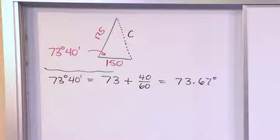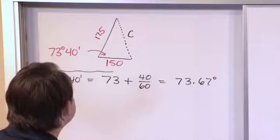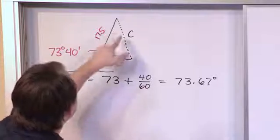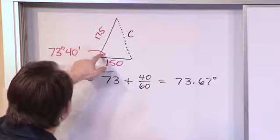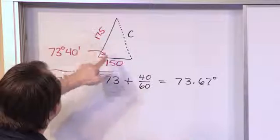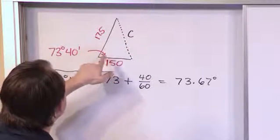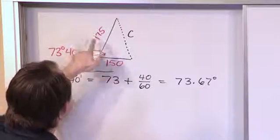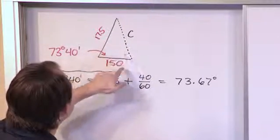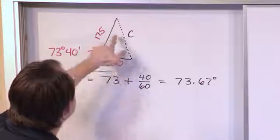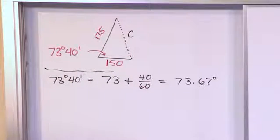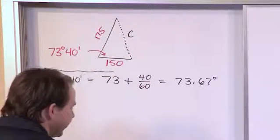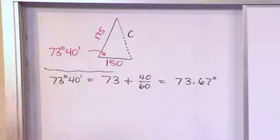Notice that we cannot use the law of sines for this problem because we don't have enough information. We know this angle and we know these two sides, but we don't know any of the opposite angles, and we can't do subtraction to find them. So if you try to write down the law of sines, you'll find out quickly that you don't have enough information to use it.